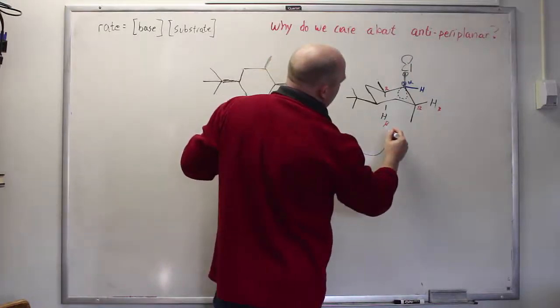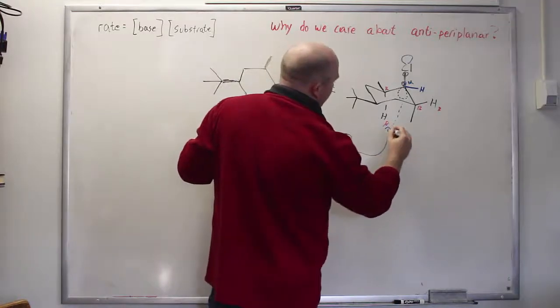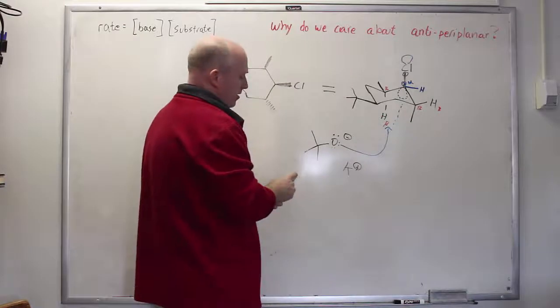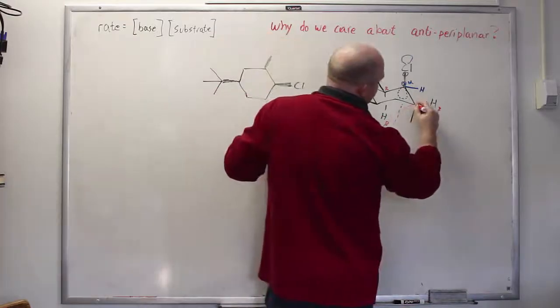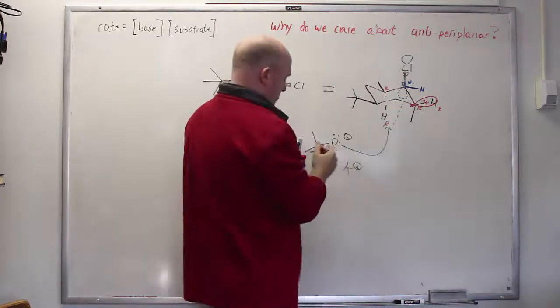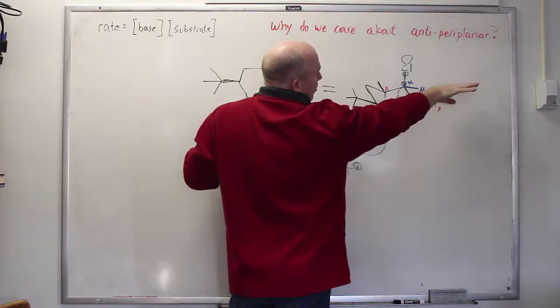So this is trying to flow to that sigma star orbital but it encounters the beta hydrogen first. In principle of course you could imagine encountering this beta hydrogen. But if you look at this sigma bond right here you will notice that it is poorly aligned with that particular orbital. This hydrogen is sticking up and right in the equatorial position.